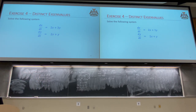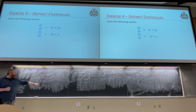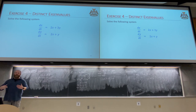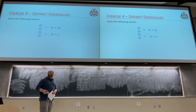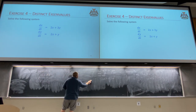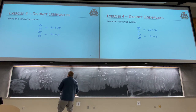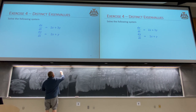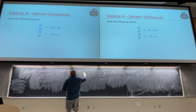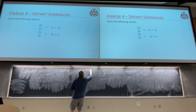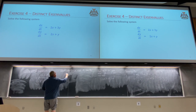Two distinct eigenvalues is nice because if I have two distinct eigenvalues I'm going to get two independent eigenvectors, and I need them to be linearly independent. Continuing, we've solved for the eigenvalues λ. Our next step is to solve for our eigenvectors K — a capital K₁ and a capital K₂.